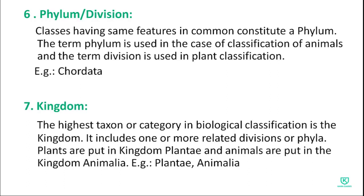The seventh and highest level is kingdom. Kingdom is the highest taxon in biological classification. It includes one or more related divisions or phyla. Plants are placed in kingdom Plantae and animals in kingdom Animalia.